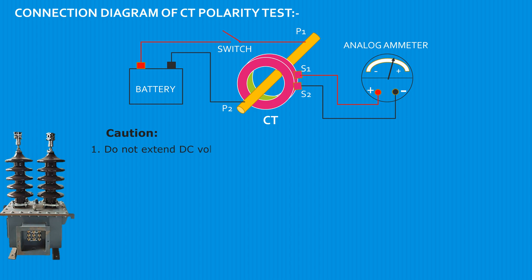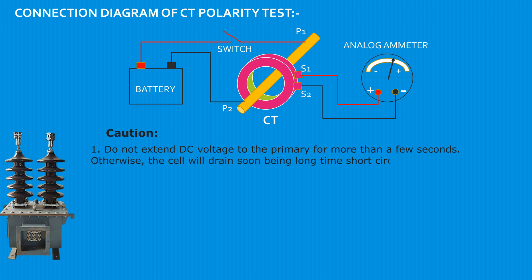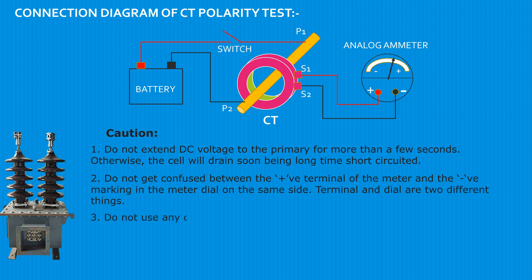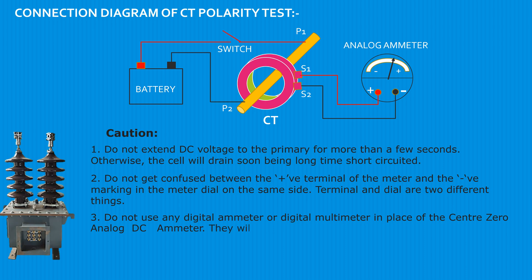Do not apply extended DC voltage to the primary of the test CT. Do not use any digital ammeter or digital multimeter in place of a center-zero analog DC ammeter, as they will not serve the purpose of this test.